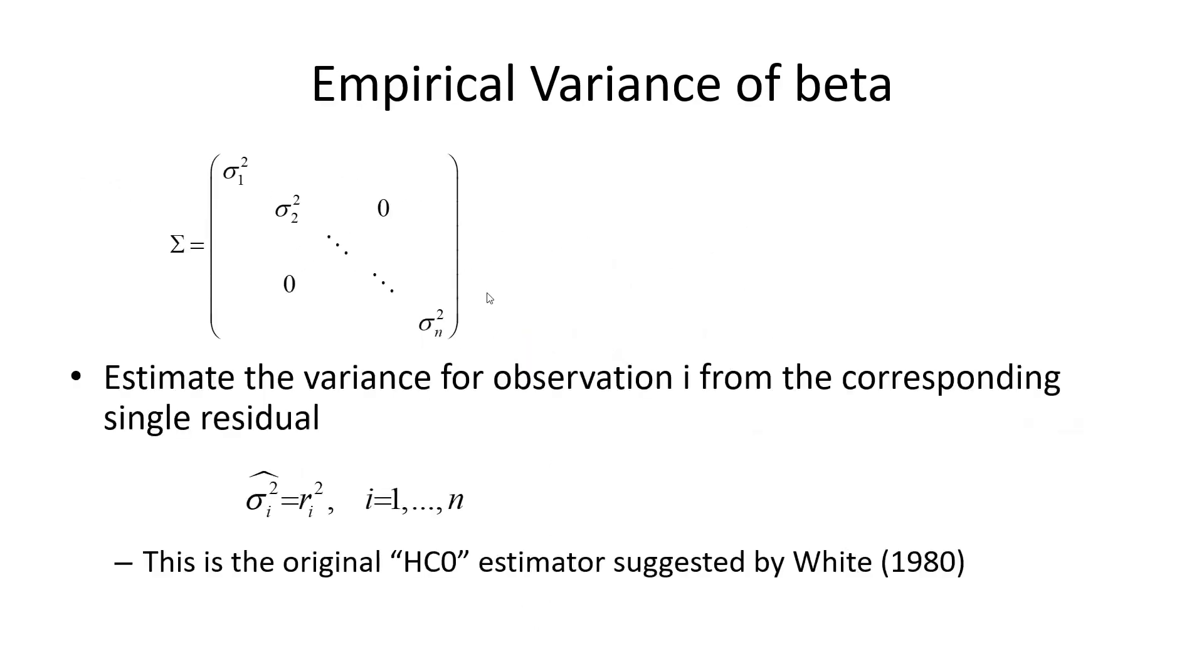So the question remains how to estimate this. And we have, as I said, one observation for one unknown. And the most intuitive way to estimate the variability associated with the i-th observation is to compute the i-th residual and square it. We have only one observation to contribute to this estimator.